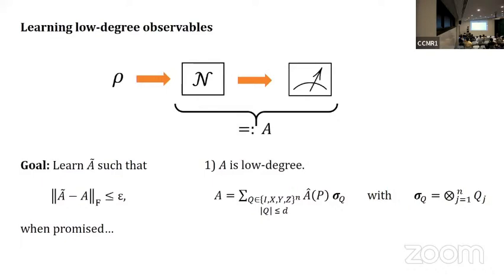This notation here is our product of Paulis, one for each qubit. This notation is just a number, the coefficient on that Pauli operator. So again, low degree, degree D, where the size of Q is the number of non-identity entries.